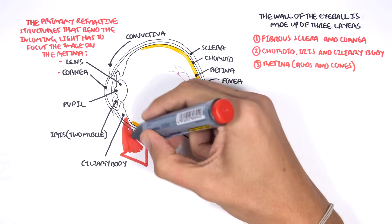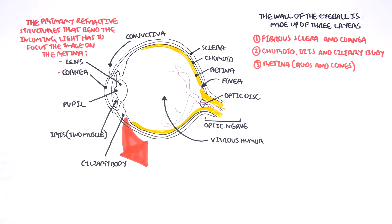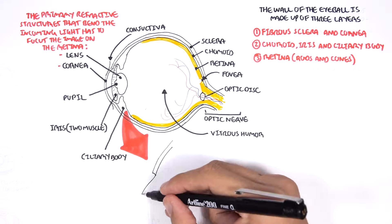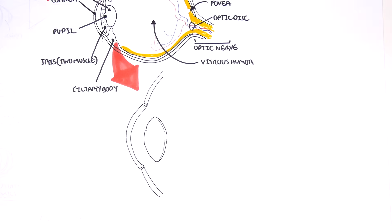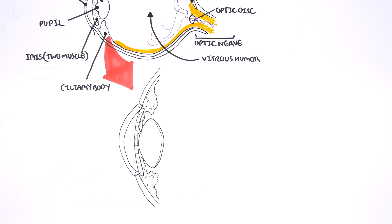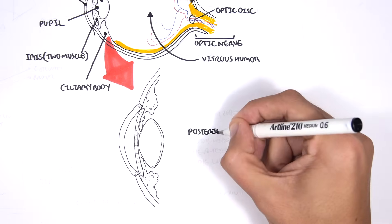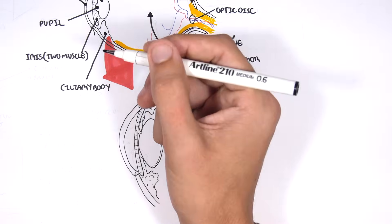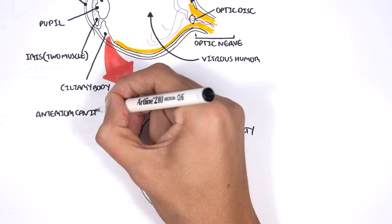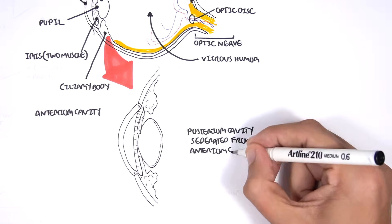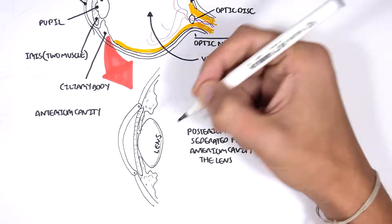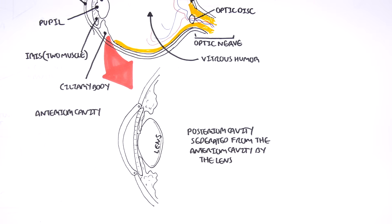Let us zoom into the anterior section of the eyeball. Here is the anterior section of the eyeball. There is the posterior cavity and an anterior cavity. The posterior cavity is separated from the anterior cavity by the lens. The posterior cavity contains the vitreous humor.